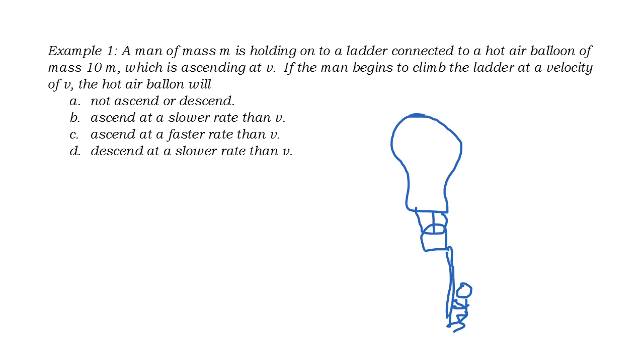Here we have a man of mass m holding onto a ladder connected to a hot air balloon of mass 10m, which is ascending at a speed of v. So right now our entire system has a speed upward of v.